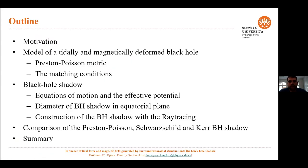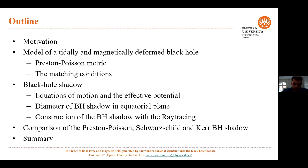Here is the outline of my presentation. I will start with a few words about motivation, then briefly explain the model which was studied — a model of a tidally and magnetically deformed black hole. I will describe the Preston-Poisson metric used for the analysis, then go to the construction of the black hole shadow, and finally show a comparison with Schwarzschild and Kerr black holes for some representative parameters.